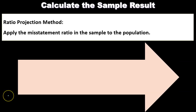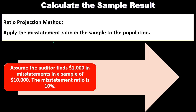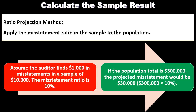To calculate the sample results, one method is the ratio projection method: apply the misstatement ratio found in the sample to the population. For example, assume the auditor finds a $1,000 misstatement in a sample of $10,000 — the misstatement ratio is 10%. If the population totals $300,000, the projected misstatement would be $30,000 (i.e., $300,000 times 10%). That's the ratio projection method.